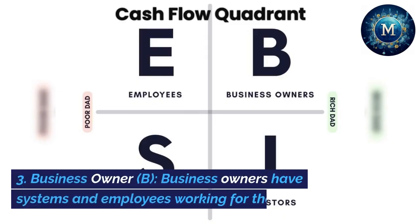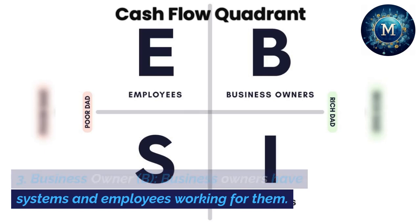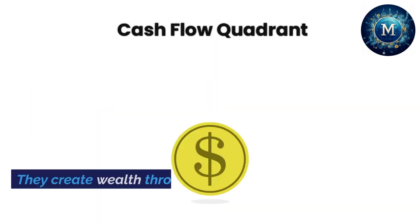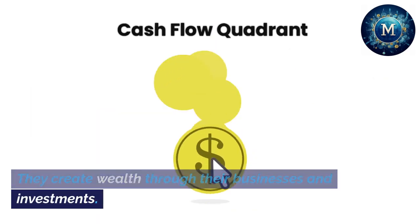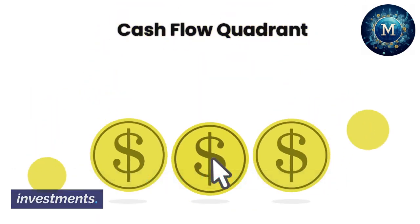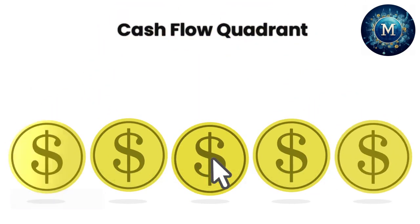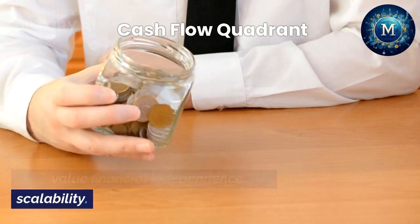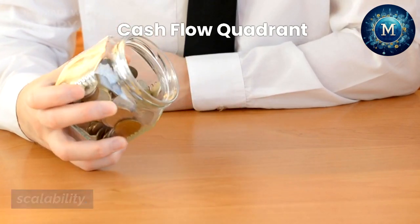3. Business Owner (B). Business owners have systems and employees working for them. They create wealth through their businesses and investments, and value financial independence and scalability.